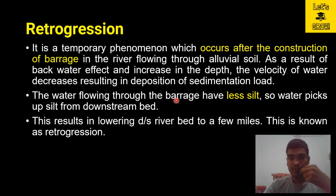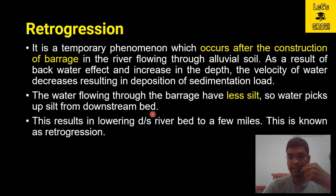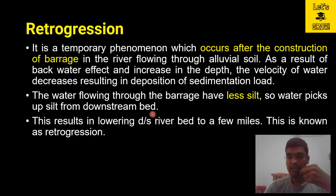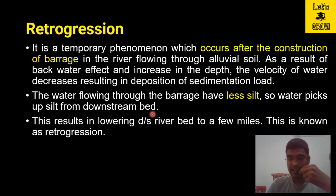The water flowing through the barrage carries less silt, so it picks up silt from the downstream bed. Whatever sediment is coming is deposited behind the weir or barrage. The water overflowing the weir is clear water — having less silt — and it will try to erode the bed of the canal, river, or channel in the downstream, because water has the tendency to remove sediments present on the bed.